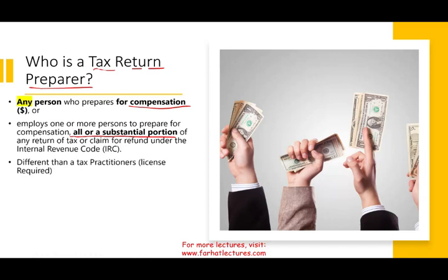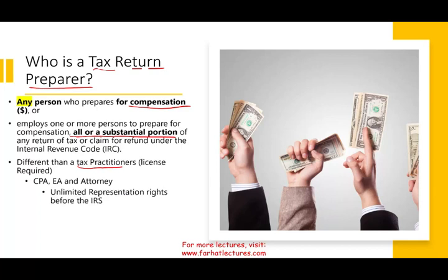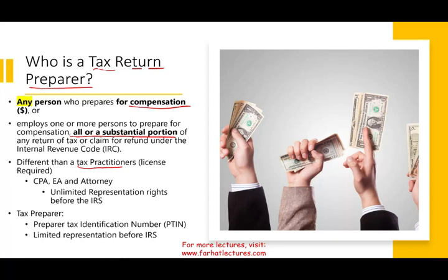Tax return preparers are different than tax practitioners. Tax practitioners require a license like a CPA, EA, or attorney — we talked about tax practitioners when we spoke about Circular 230. Tax practitioners have unlimited representation rights before the IRS. Tax preparers have a PIN number — that's how they are identified — and they have limited representation before the IRS. Anyone can be a tax preparer: you file paperwork with the IRS, obtain a PIN, and start preparing returns. You don't have to be an attorney, an EA, or pass any exam.